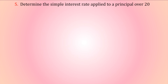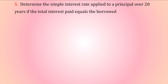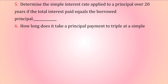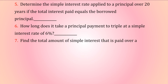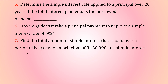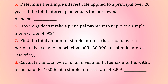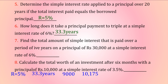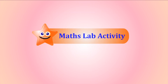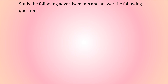Determine the simple interest rate applied to a principal over 20 years if the total interest paid equals the borrowed principal. How long does it take a principal to triple at a simple interest rate of 6%? Find the total simple interest paid over 5 years on a principal of ₹30,000 at 6%. Calculate the total worth of an investment after 6 months with a principal of ₹10,000 at a simple interest rate of 3.5%.